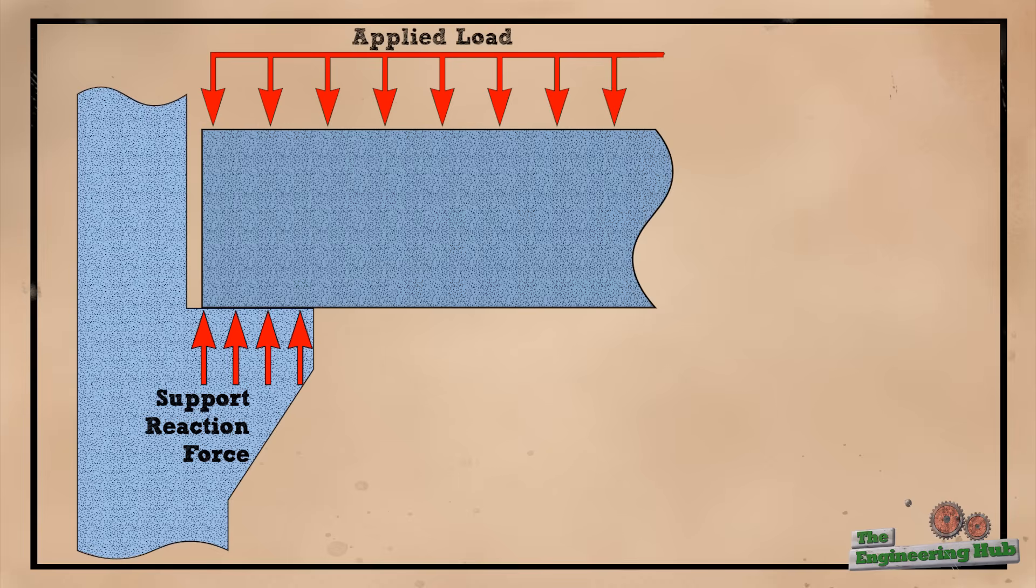Stirrups get engaged when an inclined crack occurs in the beam. These cracks are often referred to as shear cracks, however, they are actually caused by tension forces, as we will see later.